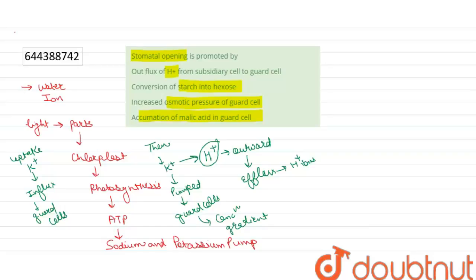This is an active ion exchange and requires ATP energy and cytokinin. Cytokinin is a plant hormone.